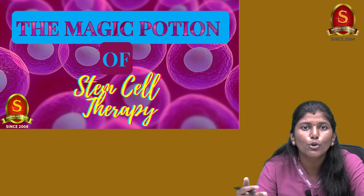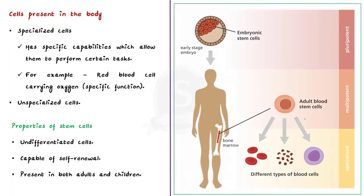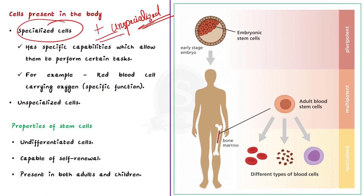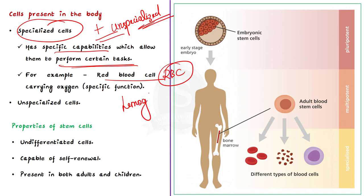If you want to know how, do watch this video continuously. Stem cells are unspecialized cells of the human body. Note that there are two types of cells present in the body: specialized and unspecialized cells. Specialized cells have specific capabilities that allow them to perform certain tasks. For example, take RBC or the red blood cell — it contains hemoglobin that allows it to carry oxygen. But stem cells have unspecialized capability; they can differentiate into any cell of an organism and have the ability of self-renewal.